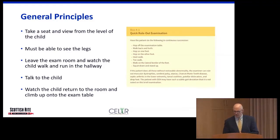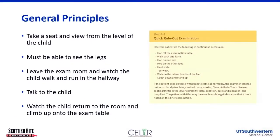A quick rule-out orthopedic examination can rule in or rule out whether findings are neurologic, congenital, developmental, or normal. Within a minute — having them walk, hop up and down, hop on one foot symmetrically, heel walk, toe walk, walk on the lateral border of the foot, squat down and stand up without using their hands — you get a good idea of coordination and function, which guides where the etiology of the limb length difference may be coming from.